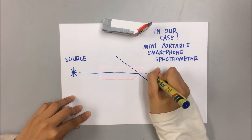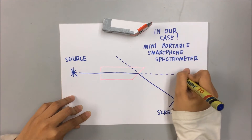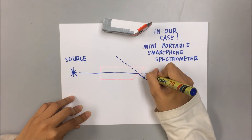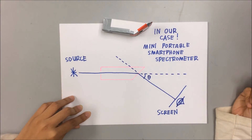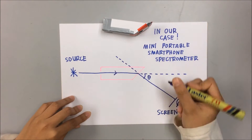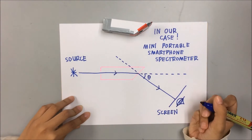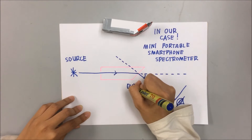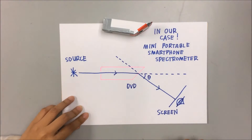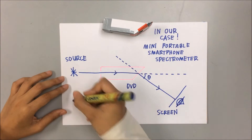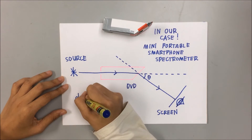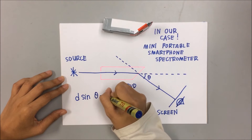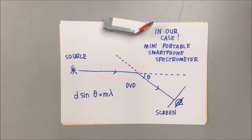If parallel light of wavelength is incident normally on a grating, then the angle theta at which the intensity of the transmitted light is a maximum is given by the grating equation: D sin(theta) equals M lambda.